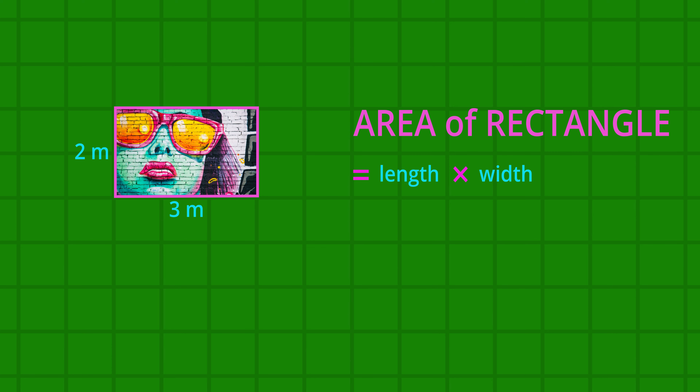Let's do another example. Imagine this rectangle is a wall to be painted. Its length is three meters and the width is two meters. The rule is: area of the rectangle equals length times width. The length is three and the width is two, so the area of the wall is six square meters.